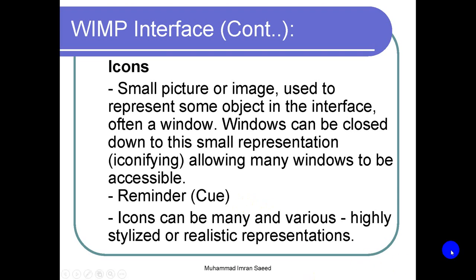Icons can be many and various — highly stylized or realistic representations. But remember: try to use icons that are understandable for every user. For example, if you do not want to use a scissor for cut, you might consider a knife — but you cannot, because we have a well-established understanding that the scissor icon means cut content and put it into memory. Do not use any other icon for cut; use the scissor, even if it is stylized with a beautiful design. Similarly, use a floppy disk to represent save, so it provides ease to the user in understanding the purpose of that icon.